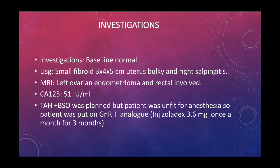Baseline investigations were done. Ultrasound showed a small fibroid of three to four by five centimetres, a bulky uterus, and right-sided abnormality. MRI showed a left ovarian endometrioma with rectal involvement. CA-125 showed a level of 51 international units per ml. Total hysterectomy and bilateral salpingo-oophorectomy (TH and BSO) was planned but the patient was unfit for anaesthesia, so she was put on medical management.